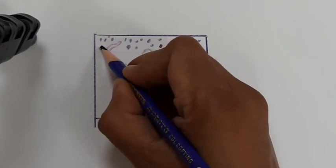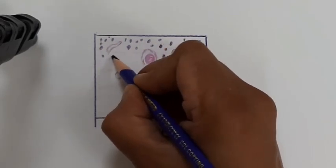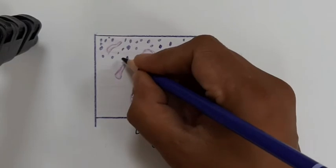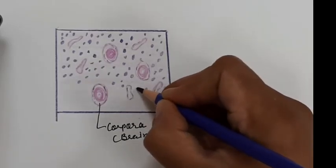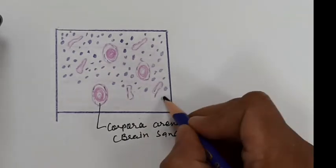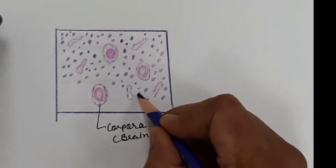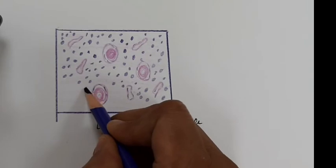They also secrete the calcium salt that is deposited within the gland. Another cell type is the interstitial cells or glial cells, which comprise 5%.